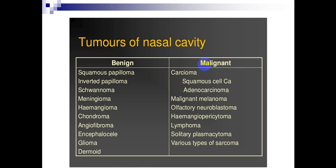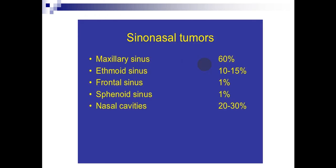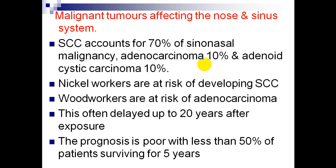The most common benign tumors of the nasal cavity are squamous and inverted papilloma. The most common malignant tumor of the nasal cavity is squamous cell carcinoma. Maxillary sinus tumors account for 60%, nasal cavity tumors 20-30%, ethmoid sinus tumors 10-15%, while frontal sinus and sphenoid sinus tumors account for 1%. Squamous cell carcinoma accounts for 70% of sinonasal malignancy, adenocarcinoma 10%, and adenoid cystic carcinoma 10%.